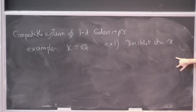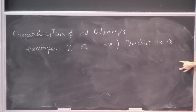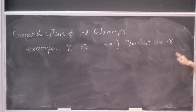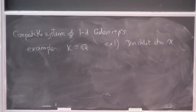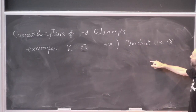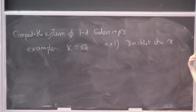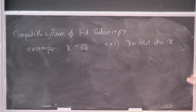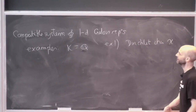Take Q(i), a quadratic extension. The Galois group is cyclic of order two. Take the character of that group that sends the identity to one and complex conjugation to negative one. There's a representation of Gal(Q-bar over Q) with image plus or minus one, and now let's just pretend plus or minus one are l-adic numbers for all primes l. That's a compatible system of one-dimensional Galois representations.